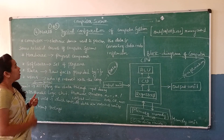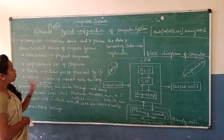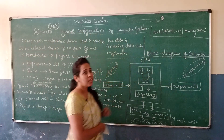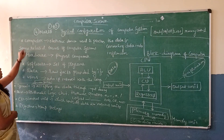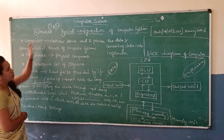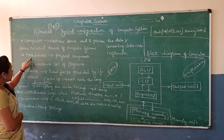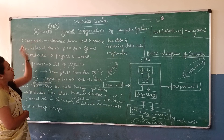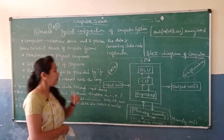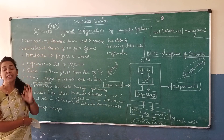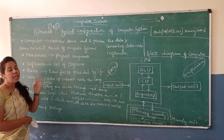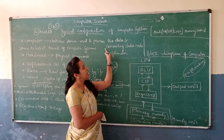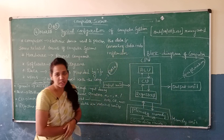First we are going to know the terminologies in this first chapter, 'Typical Configuration of Computer System.' So the first terminology is: what is meant by computer? It is an electronic device used to process the data and converting the data into information.